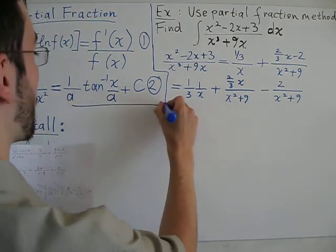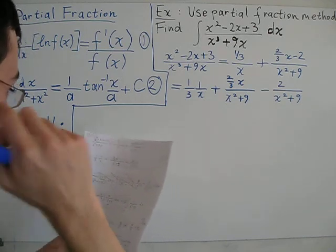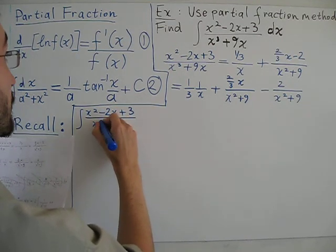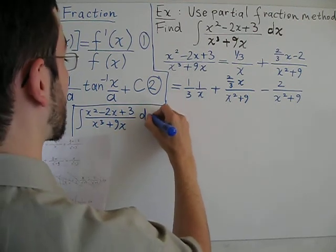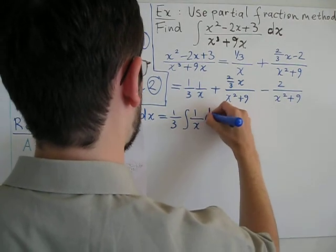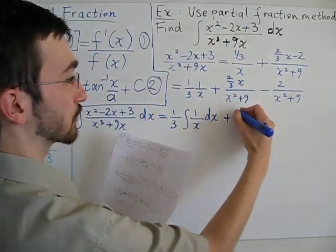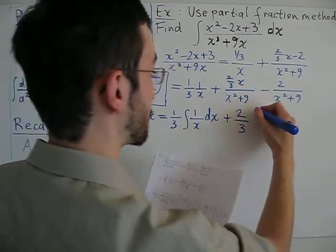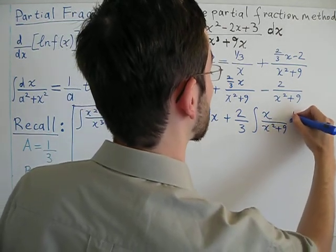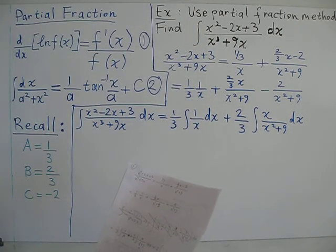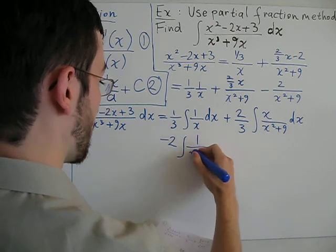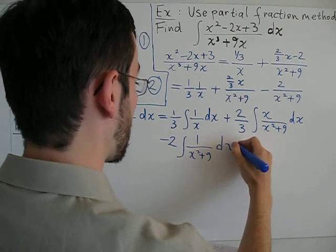And now, we shall end up with the original integrand, or the integral that we have, will end up equaling the following. So, 1/3 times the integral of 1 over x dx plus 2/3 times the integral of x over x squared plus 9 dx, and minus 2, 1 over x squared plus 9 dx.